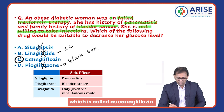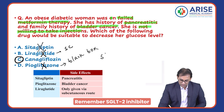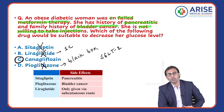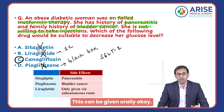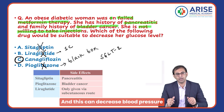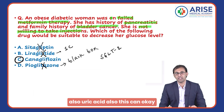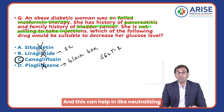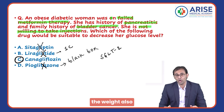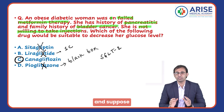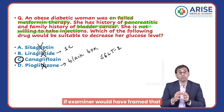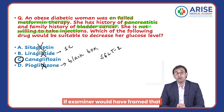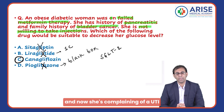Option C is canagliflozin — remember, it is an SGLT2 inhibitor. It can be given orally, it can decrease blood pressure, it can lower uric acid, it is neutral to lipids, and it can also help with weight reduction.